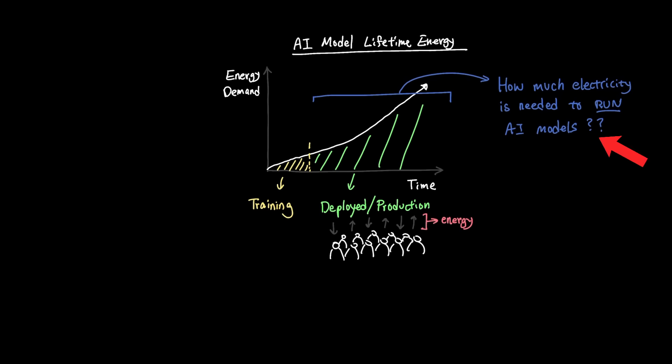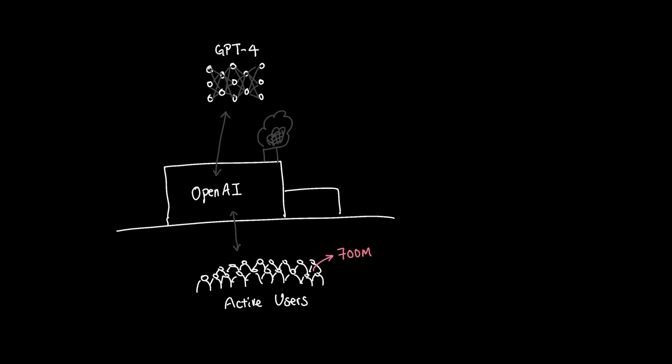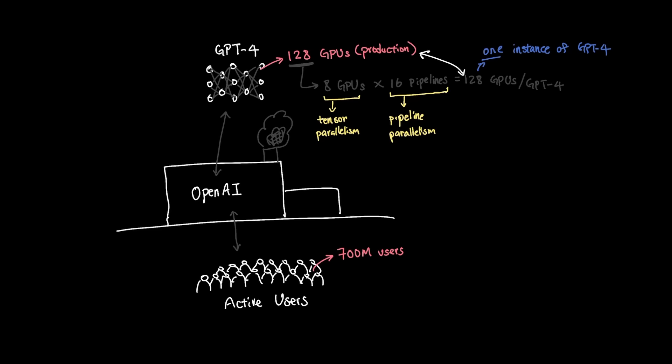Okay, back to the question. How much energy is needed to run these AI models? OpenAI is projected to have more than 700 million weekly active users using ChatGPT. So if we were to use the earlier GPT-4 model, the GPT-4 model is estimated to run on a cluster of 128 GPUs. So using the same math we used earlier for training, we have 8GPU tensor parallelism in one server connected by NVLink with 16-way pipeline parallelism. We find that we can now run the GPT-4 model in production using 128 GPUs. But that's just one instance of GPT-4 running. Meaning to service the 700 million active users that use ChatGPT, we're going to need a lot more computing, which means a lot more power.